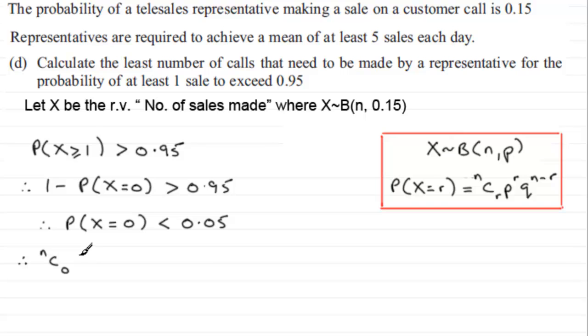P being 0.15, and that's to the power 0, and then we've got 0.85, Q in other words, to the power n minus r. That's the power n, and that's got to be less than 0.05.